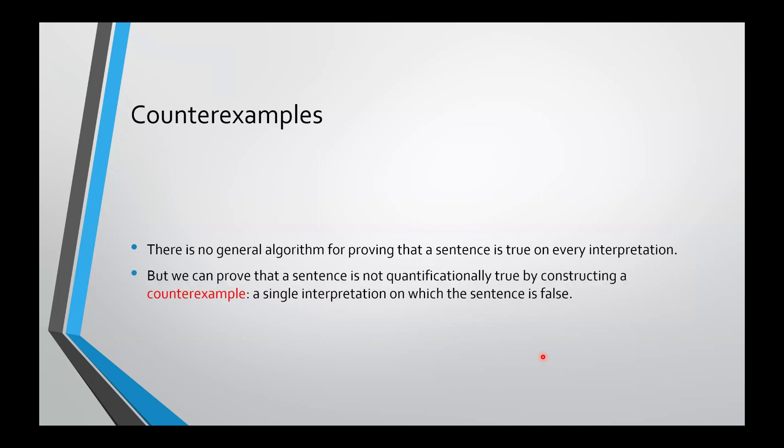What we can prove, though, is that a sentence is not quantificationally true by constructing what's called a counterexample. A counterexample is a single interpretation on which the sentence is false. If you have one interpretation on which the sentence is false, then you've shown it is not true on every interpretation, which means it's not quantificationally true.